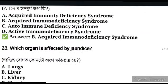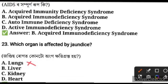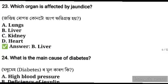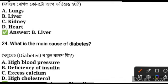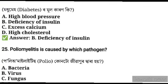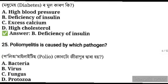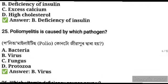Which organ is affected by jaundice? Jaundice affects the liver, not the lungs. What is the main cause of diabetes? The main cause of diabetes is insulin deficiency. Poliomyelitis is caused by which pathogen? Polio is caused by a virus.